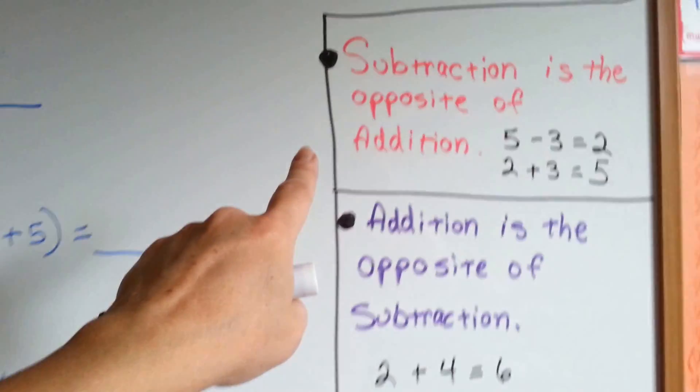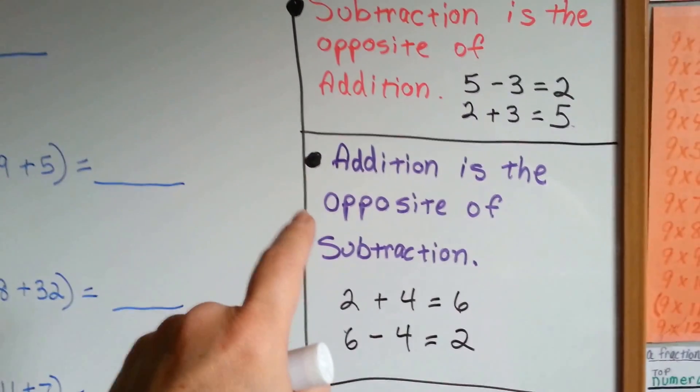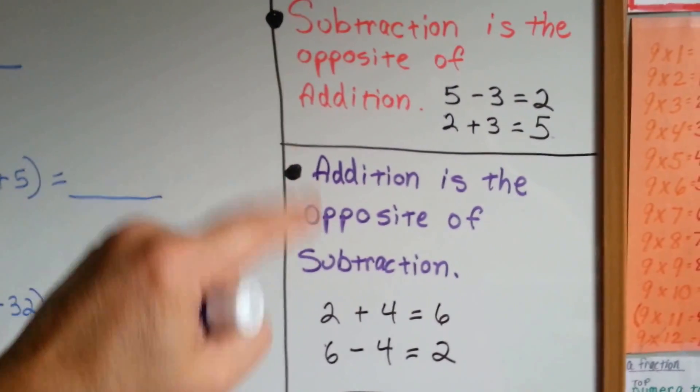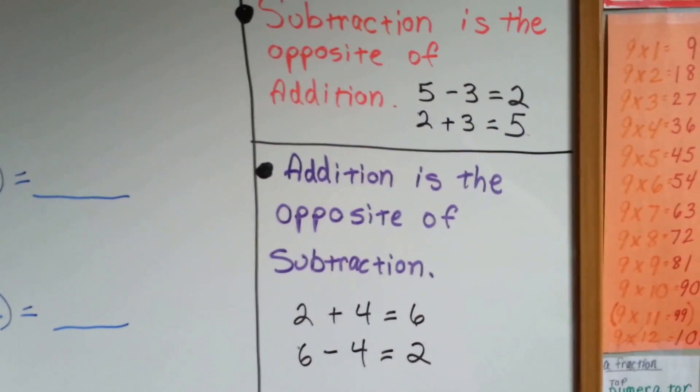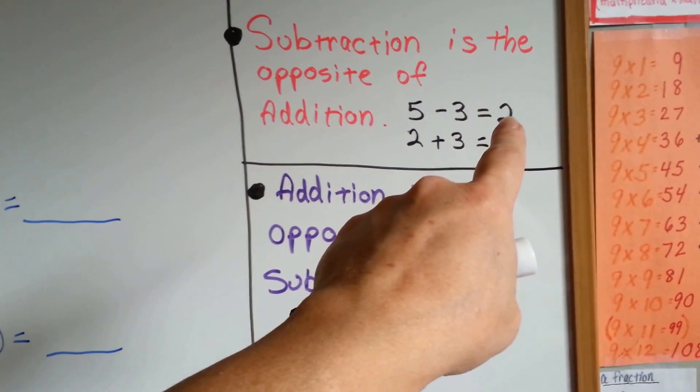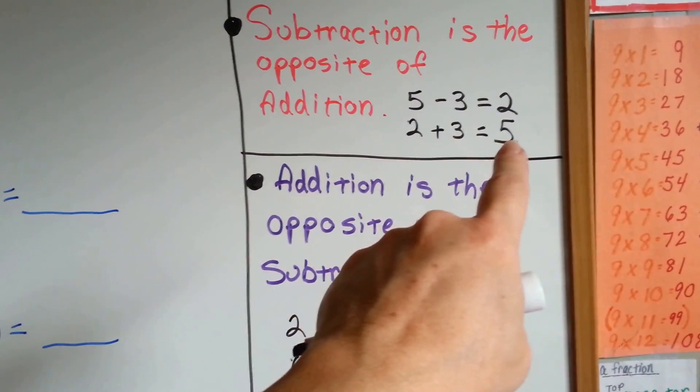So let's look over here. Subtraction is the opposite of addition, and addition is the opposite of subtraction. You can use each one to help you solve the problem. In the subtraction problem, 5 take away 3 equals 2. The addition opposite would be 2 plus 3 equals 5.